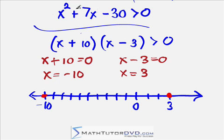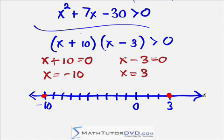These are the points where the original quadratic function equals zero. But notice the original problem is not asking when this function equals zero — it's asking where this function is greater than zero. So notice we really have three intervals to look at: the interval between negative 10 and positive 3, the interval greater than positive 3 going toward positive infinity, and the region less than negative 10 going toward negative infinity.